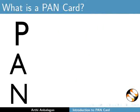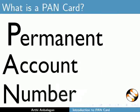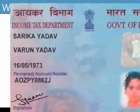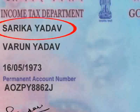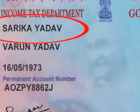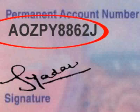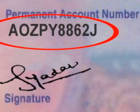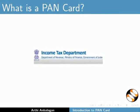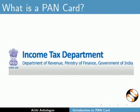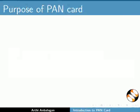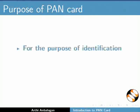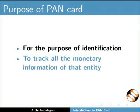PAN stands for Permanent Account Number. It is a 10 digit alphanumeric combination issued to all juristic entities. It is issued by the Indian Income Tax Department. The most important purpose of allotting a Pancard is for identification and to track all the monetary information of that entity.